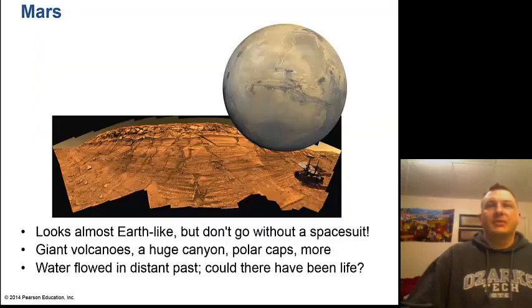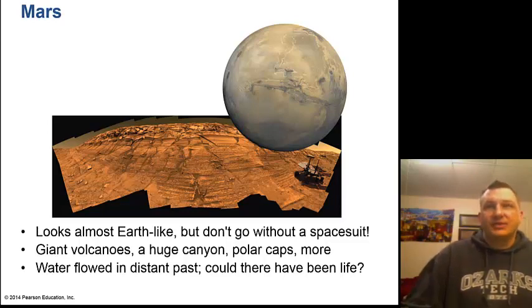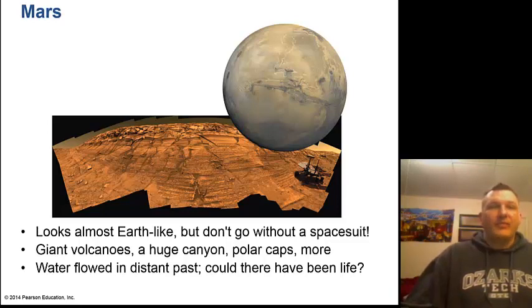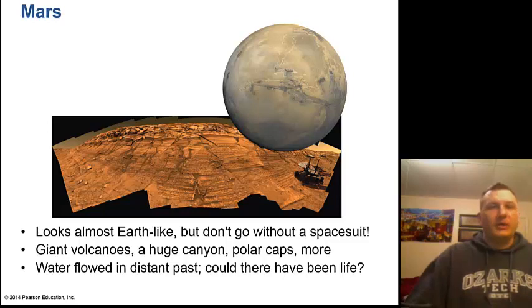Mars is the most visited planet by robotic spacecraft. It looks almost Earth-like but don't go without a space suit — its atmosphere is about 1% carbon dioxide. We see dust devils on Mars, gigantic volcanoes including the largest in the solar system called Olympus Mons, and a huge canyon called Valles Marineris, also the largest in the solar system. There are polar caps, and water flowed in the distant past. Where there's water there's life on Earth, even in hostile environments.